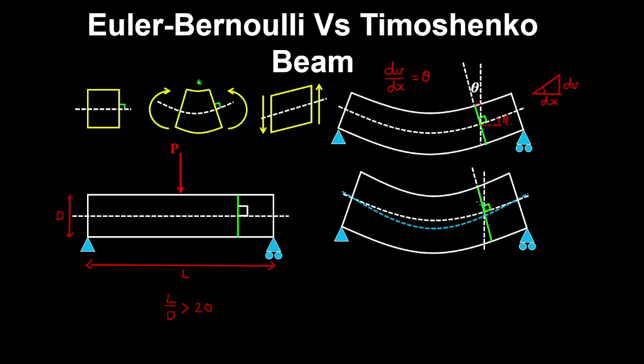Now with the Timoshenko beam, you have a rotation caused by the bending moment that causes the section to rotate, and here we can see that the section is perpendicular to the old neutral axis without shear deformation. So we have this angle looking something like this, being theta. And this bending deformation causes the rotation of the section and the neutral axis.